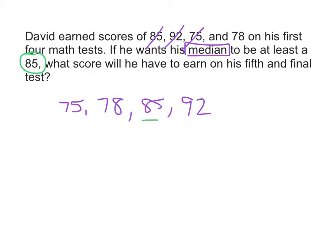So 85 is right here. And he wants that to be the middle number. So basically to make that happen, his score on his last test needs to be anything bigger than 85. 85 or bigger, because if he earned an 85, that would go here, and that would make this number the middle number.